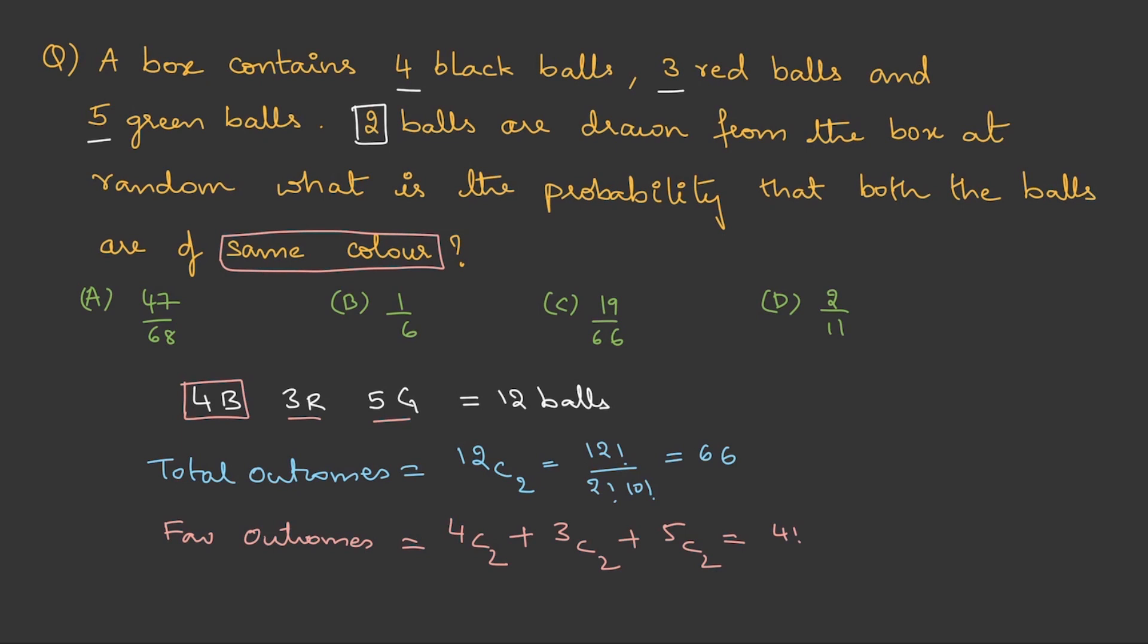So this is 4 factorial by 2 factorial into 2 factorial plus 3 factorial by 2 factorial into 1 factorial plus 5 factorial by 2 factorial into 3 factorial. This when we solve it turns out to be 19. Now let's use the formula. Probability is favorable outcomes by total outcomes that is 19 upon 66. Therefore option C.